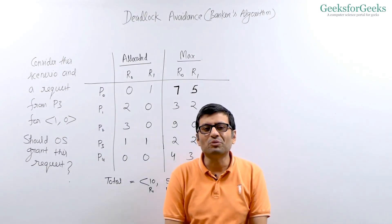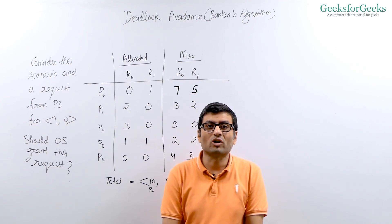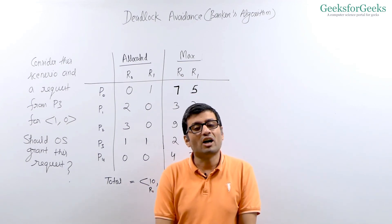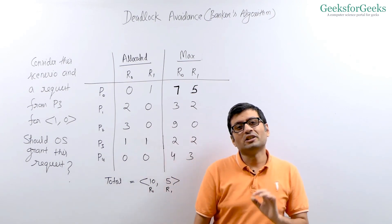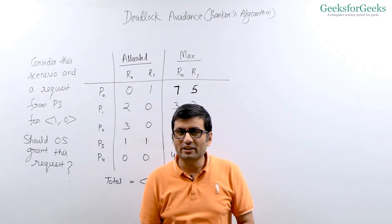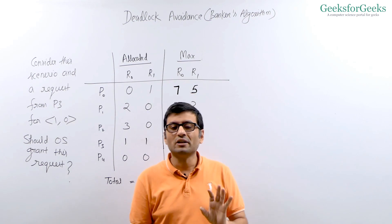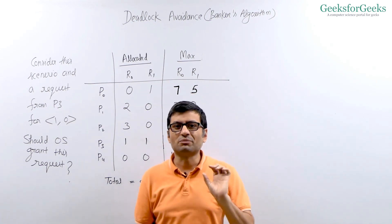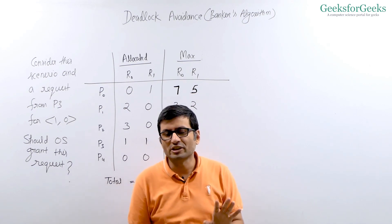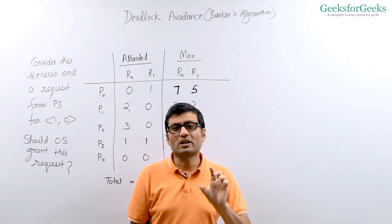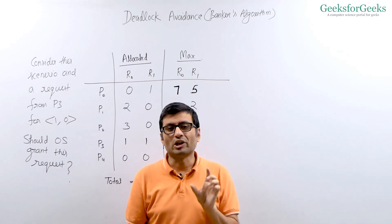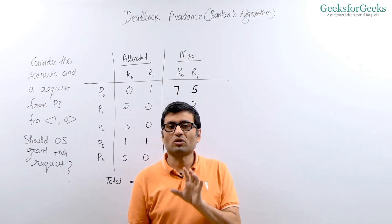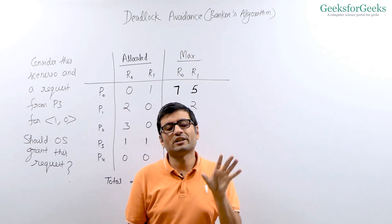In the previous video we talked about deadlock prevention. Let us now talk about deadlock avoidance. How can we avoid deadlock? Deadlock avoidance means whenever a process requests for some resources, your operating system checks whether granting these resources would lead to deadlock or not. If it might lead to deadlock, your operating system would not grant these resources.